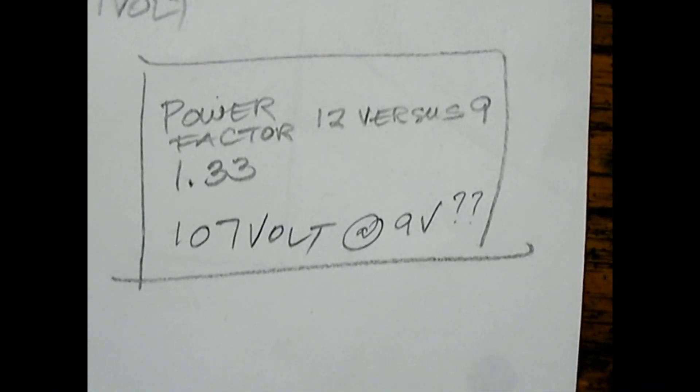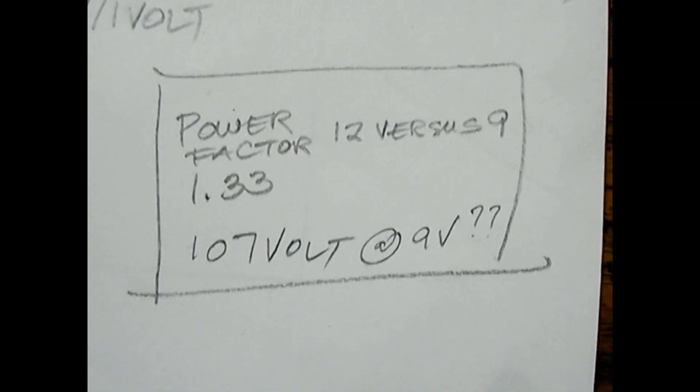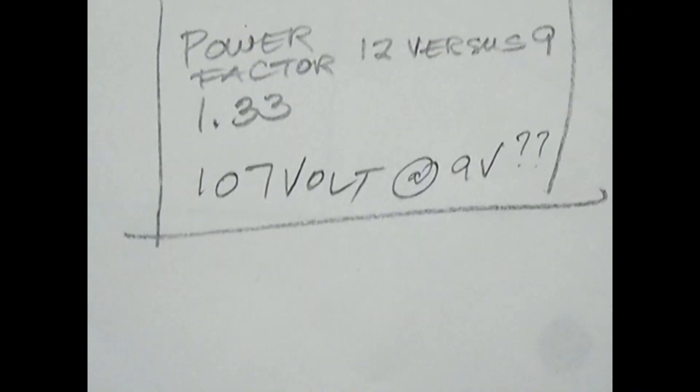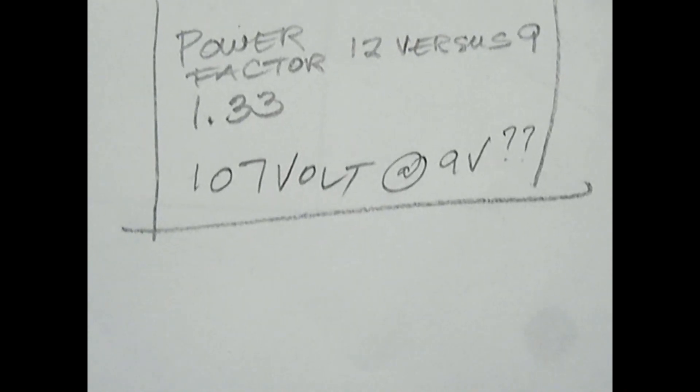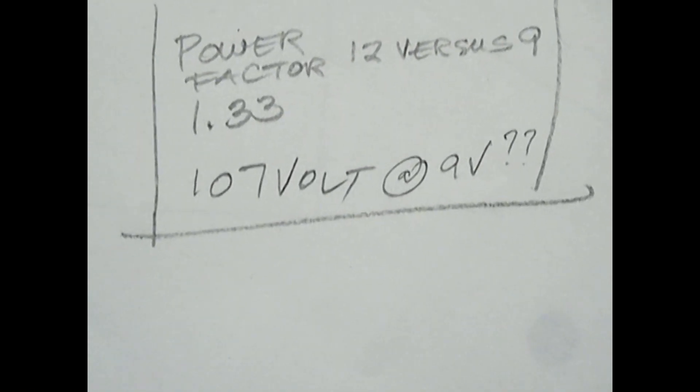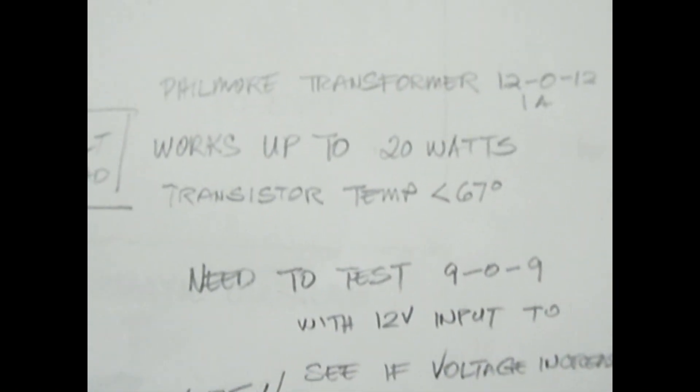Power factor 12 versus the 9 volts is 1.33. We look at the 33 here, and yes, actually I'm getting 107 volts out of it. All right, next part will be the video of the running circuit.